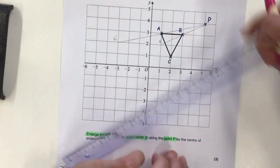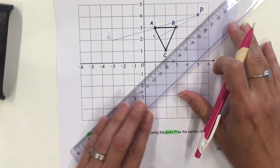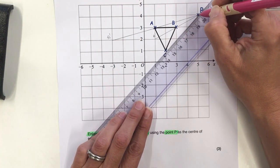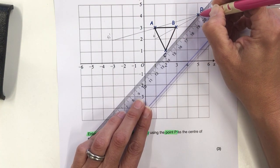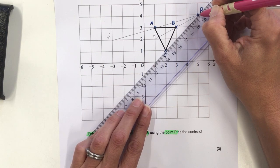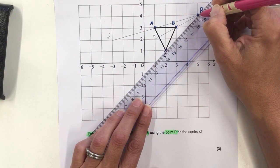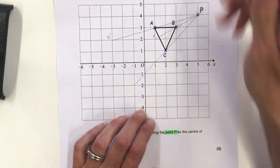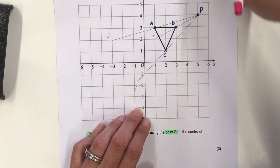Then I do the same to point C. I draw from P to C and then double that length. I call that C dash.